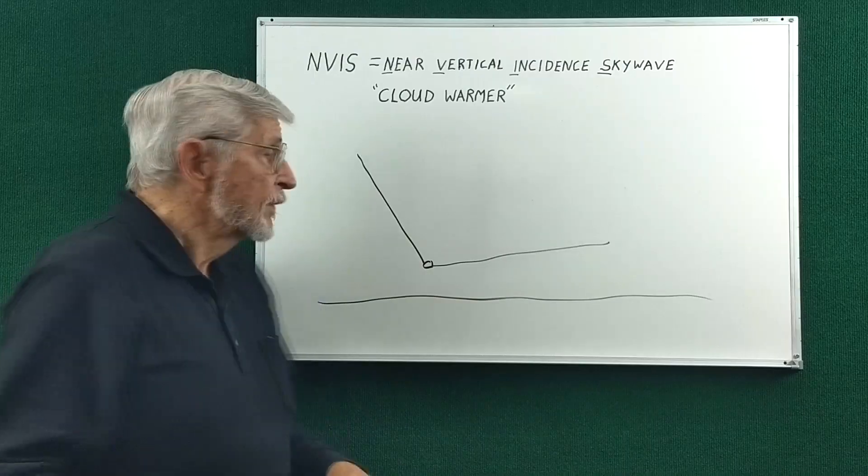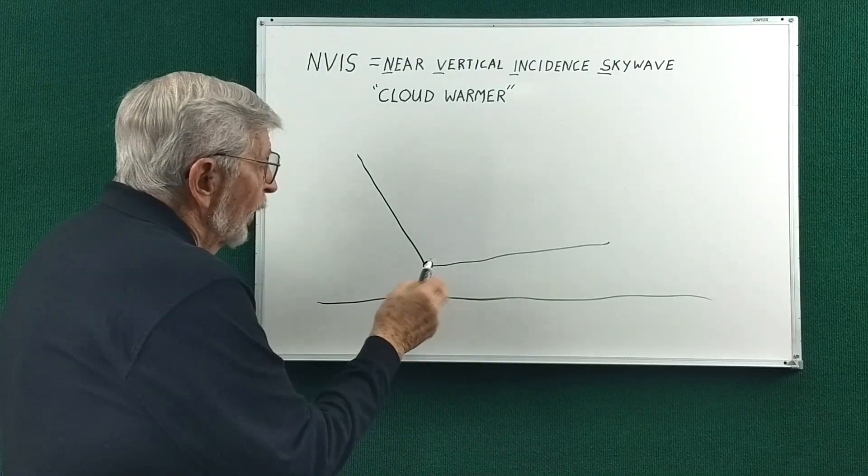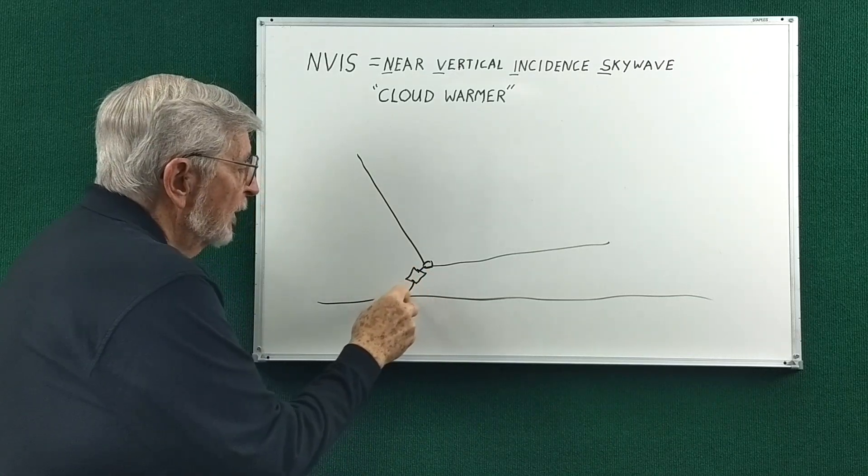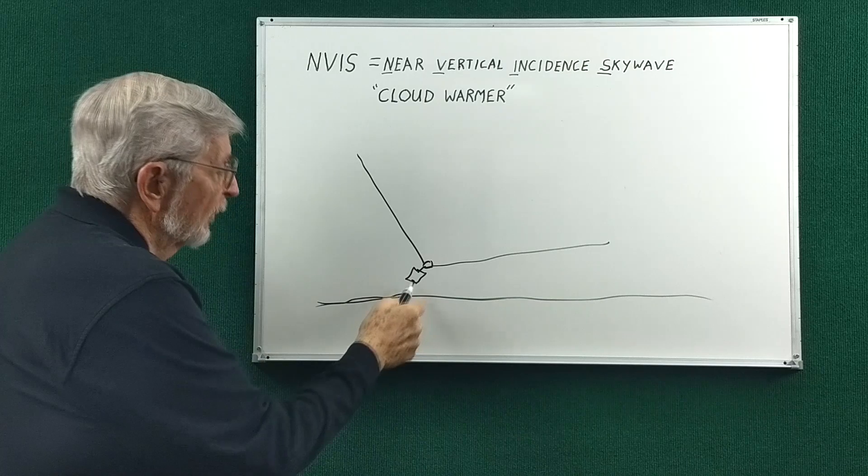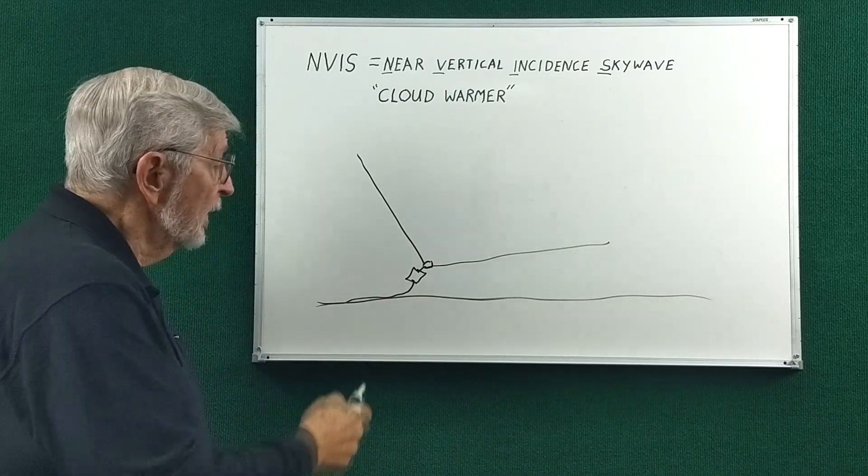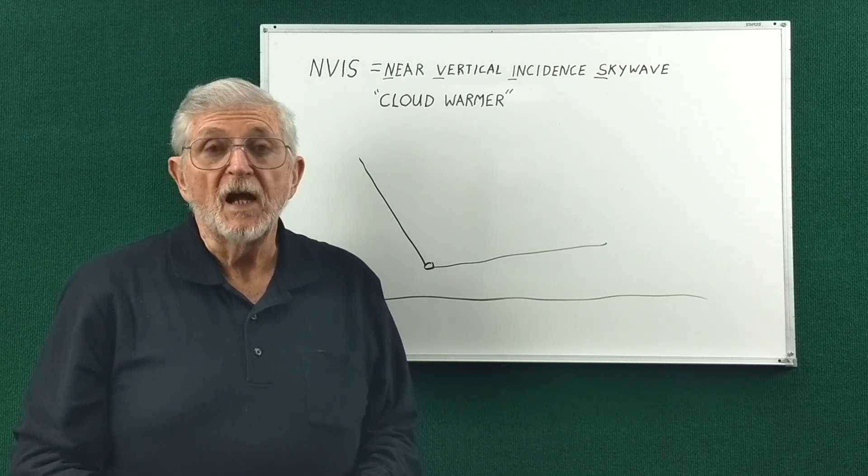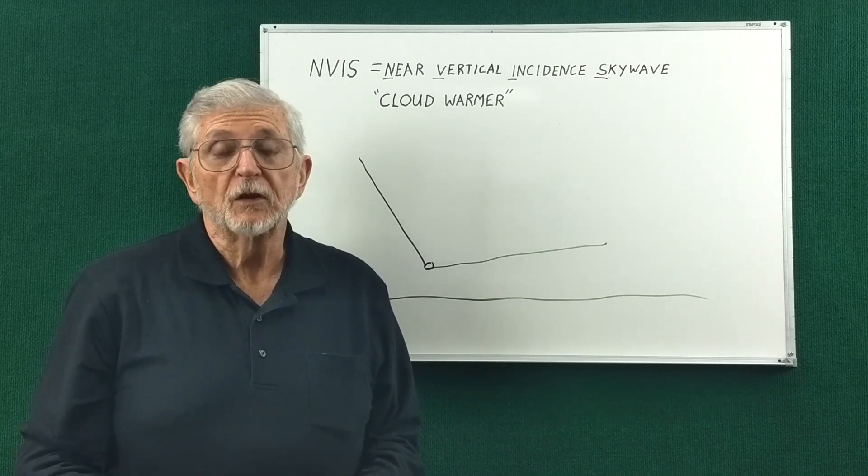I suspect the tilted vertical will give us much higher takeoff angles and still have some gain. I almost forgot, your coax will need a common mode choke to prevent the coax from acting as a grounded radial. So this is what I'm going to model using EZNec, and we'll see what things look like.